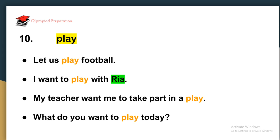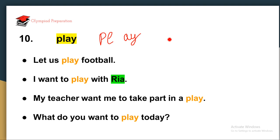The next word is 'play' — something which is your favorite thing. You love to play. How will you learn the spelling of play? PL makes a PL sound, then AY makes an A sound — PLAY.